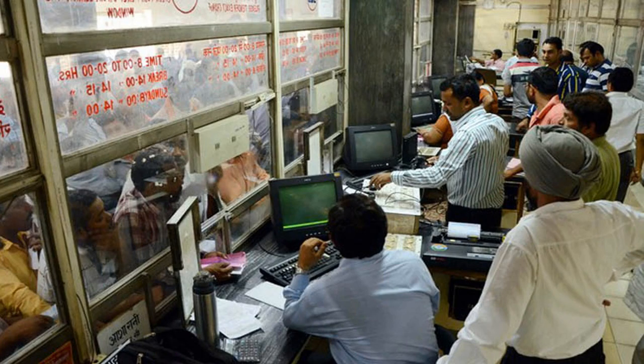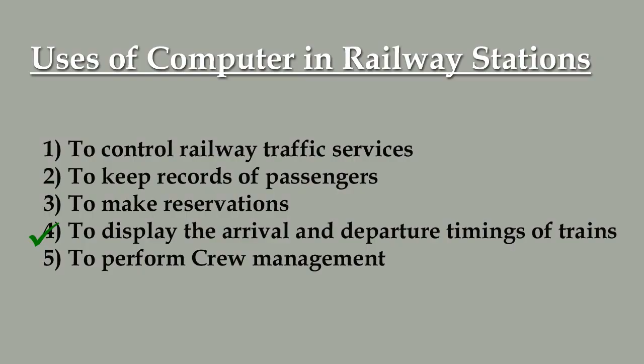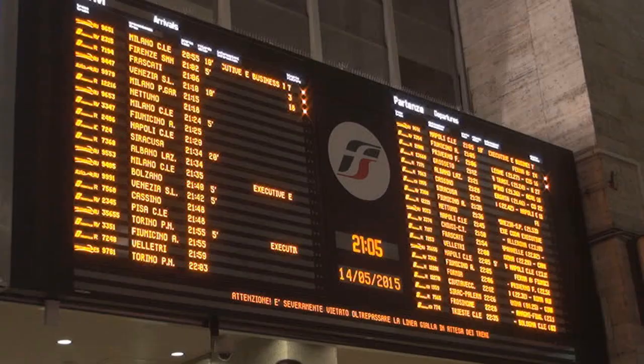Number three, to make reservations — computers are used by railway employees to book tickets using the internet. Number four, to display the arrival and departure timings of trains — computers are used to display information about the arrival and departure timings of trains.